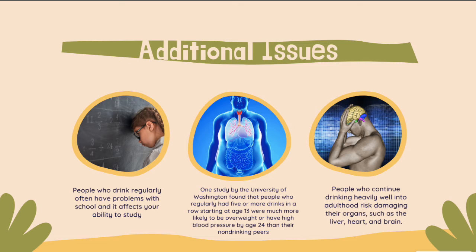People who drink regularly often have problems in school, and it affects your ability to study. A study by the University of Washington found that people who regularly had five or more drinks in a row starting at age 13 were much more likely to be overweight or have high blood pressure by age 24 than their non-drinking peers. People who continue drinking heavily into adulthood also risk damaging their organs such as their liver, heart, and brain. Alcohol has tons of long-term effects that can impact you for the rest of your life.